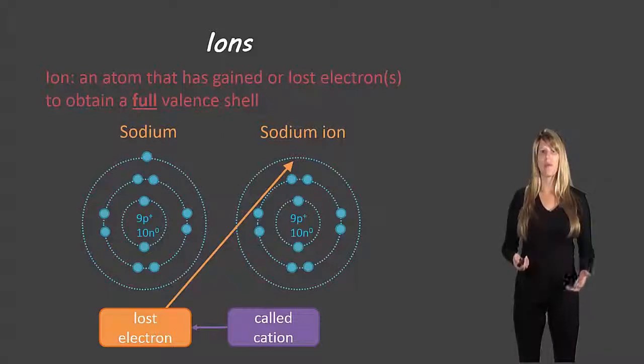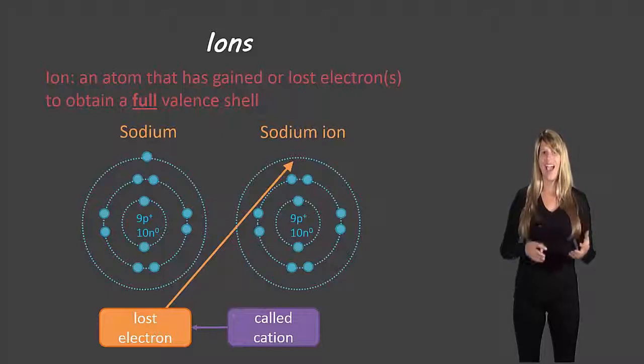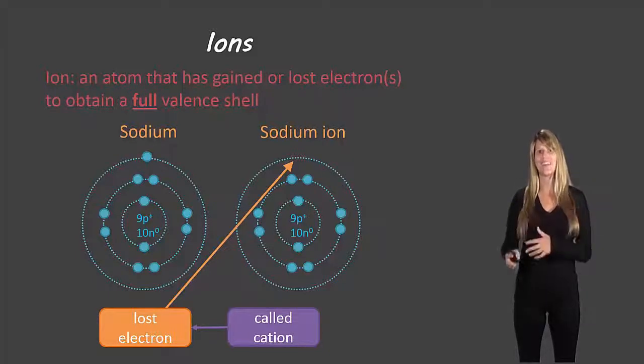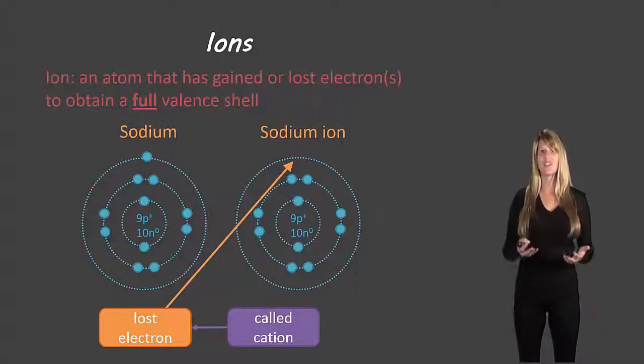Now one way to remember the difference between anion, which is gaining electrons, and cation, which is losing electrons, is that cats have paws. And so cations are positive, which means if they've lost electrons which have negative charges, they themselves become positively charged.